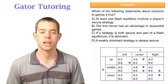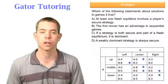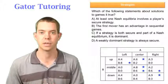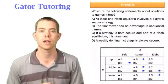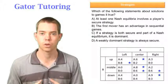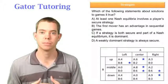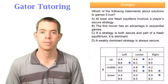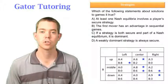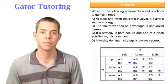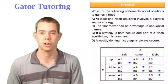Option A says at least one Nash Equilibrium involves a player's secure strategy. Let's define a secure strategy and see if that's true. A secure strategy is the best worst, or your highest minimum — you look at each strategy's lowest payoff, and a secure strategy is picking the strategy whose lowest payoff is higher than all the others.